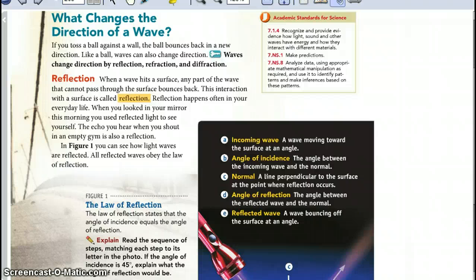Reflection. When a wave hits a surface, any part of the wave that cannot pass through the surface bounces back. This interaction with a surface is called reflection. Reflection happens often in your everyday life. When you looked in your mirror this morning, you used reflected light to see yourself. The echo you hear when you shout in an empty gym is also a reflection. In figure 1, you can see how light waves are reflected. All reflected waves obey the law of reflection.